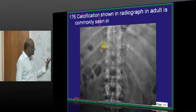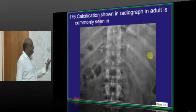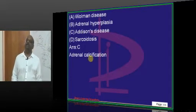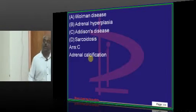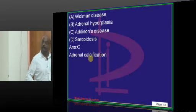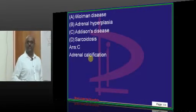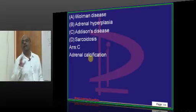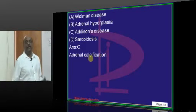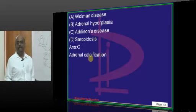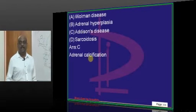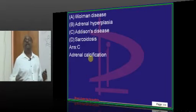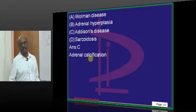Calcification of the adrenals — bilateral adrenal calcification is an important feature seen in Addison's disease, when the adrenals are completely destroyed by autoimmune injury. Not every cause of hypoadrenalism is Addison's — it is only when there is autoimmune destruction of the adrenals. In India, the most common cause for adrenal destruction is tuberculosis; in the West, it is autoimmune Addison's disease.